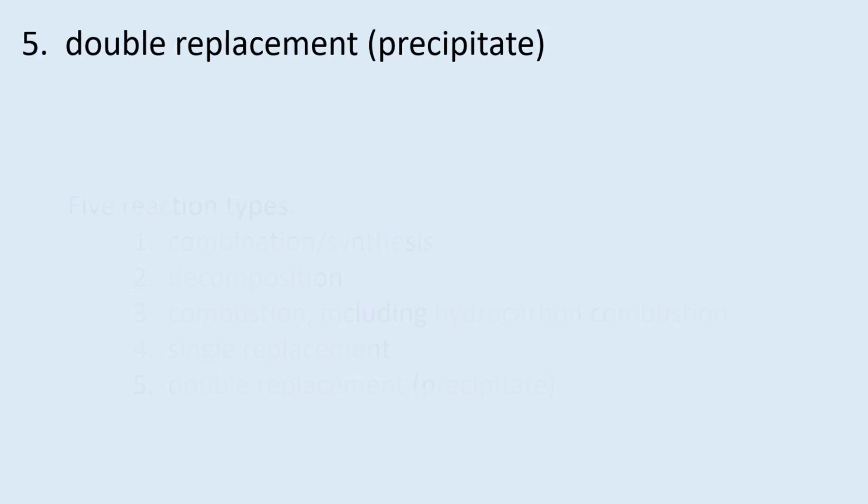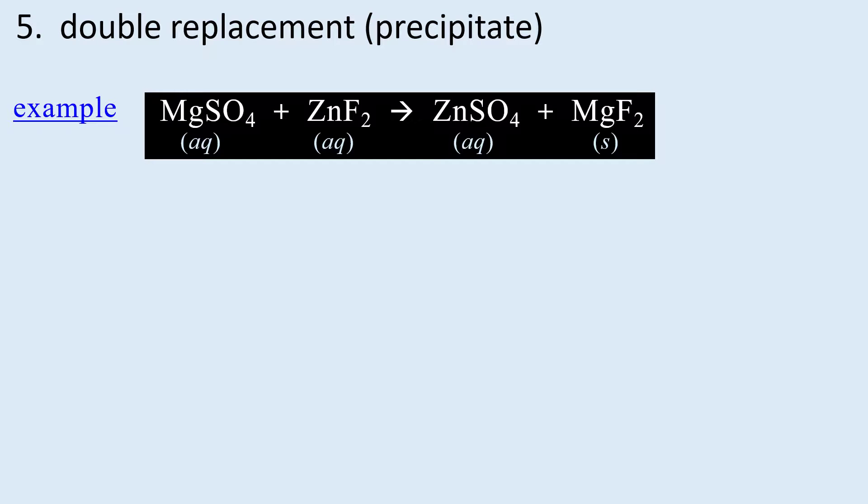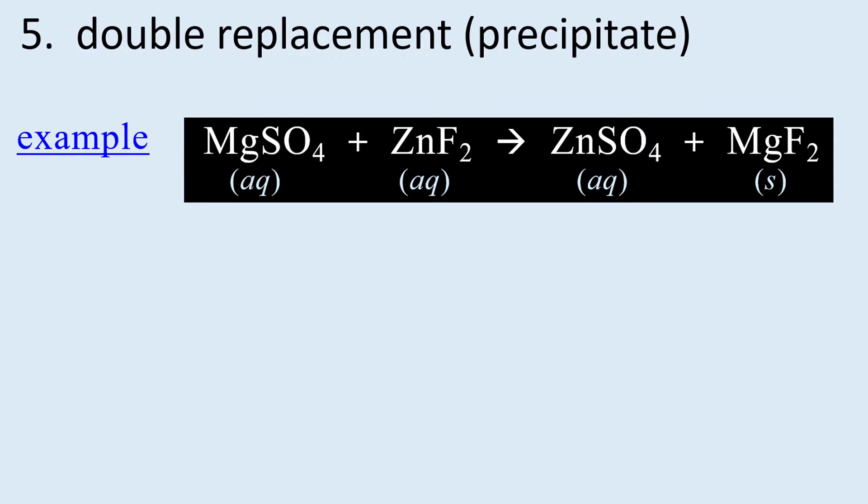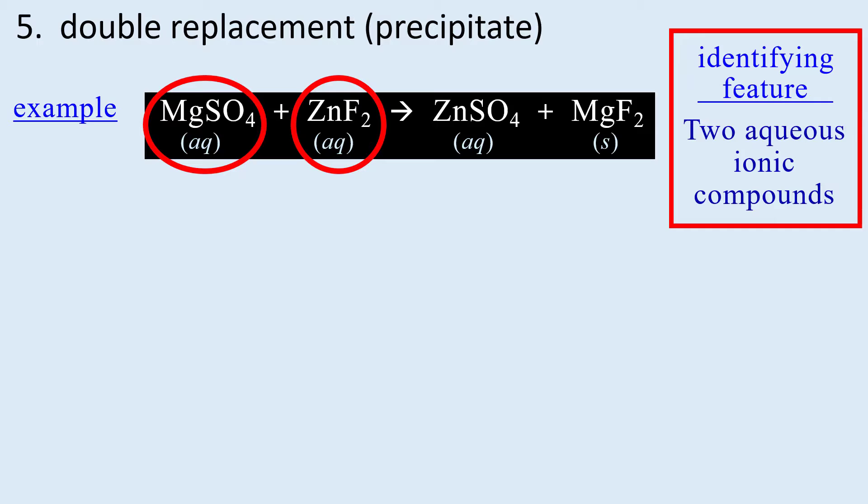Reaction 5 is double replacement or double displacement in some textbooks and this is more appropriately referred to as a precipitate reaction in more advanced textbooks. Our example is aqueous magnesium sulfate reacting with aqueous zinc fluoride. Aqueous tells us the compounds are dissolved in water and this is the identifying feature to look for. Two aqueous ionic compounds on the reactant side.